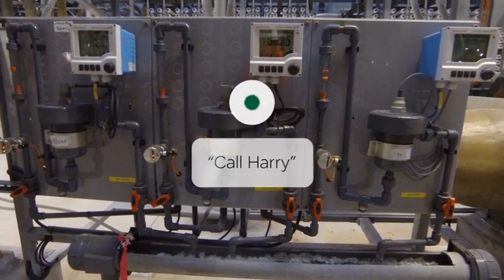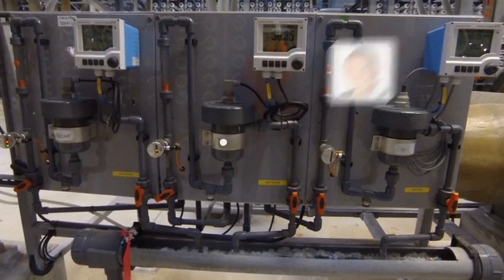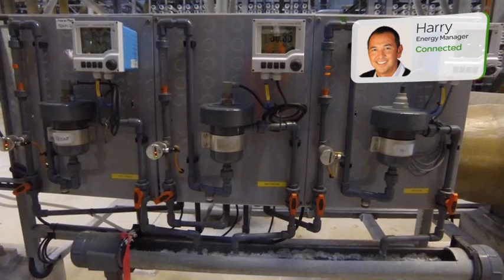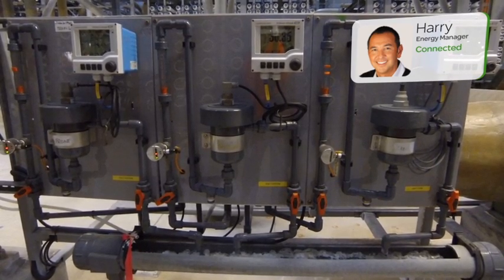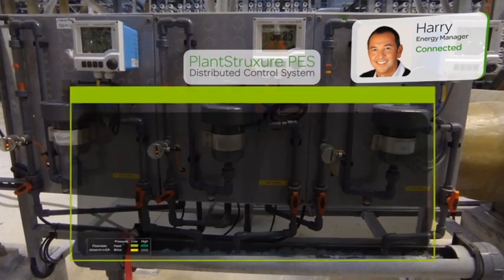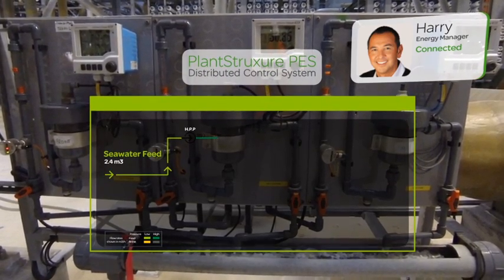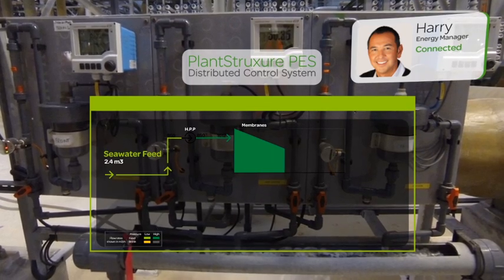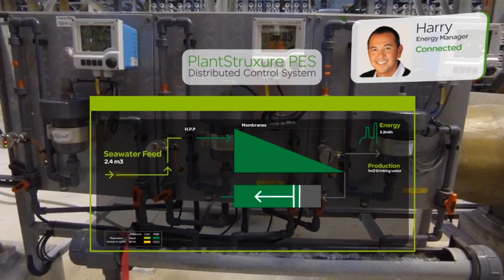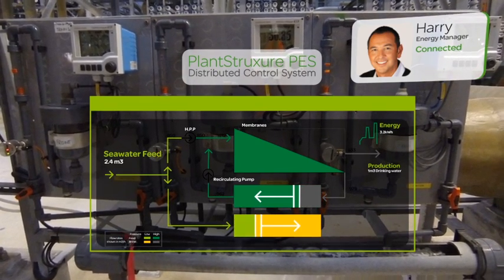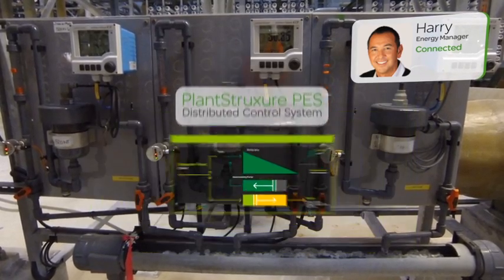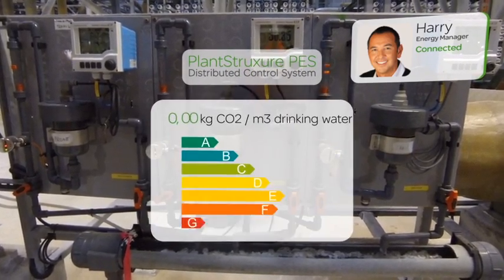Call Harry. Harry, I noticed an increase in our production per kilowatts this month. Congratulations. How did you manage to reach this result regarding the energy targets? Well, our PES system has integrated energy awareness and really lets us see where our energy is being consumed in relation to the feedwater quality. This combination of production and energy information and the expertise of Schneider Electric means a greater volume of high-quality water being processed in the first pass. Less processing means less energy.